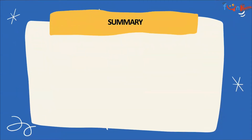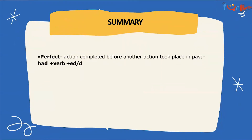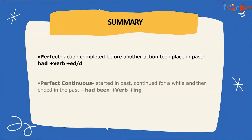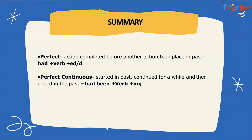Now, to summarize the next two types of past tense: in past perfect tense, we use an action which is completed before another action took place in the past, and the rule is 'had' plus verb plus 'ed' or 'd'. Past perfect continuous tense is used to describe actions that started in the past, continued for a while, and then ended in the past, and the rule is 'had been' plus verb plus 'ing'.